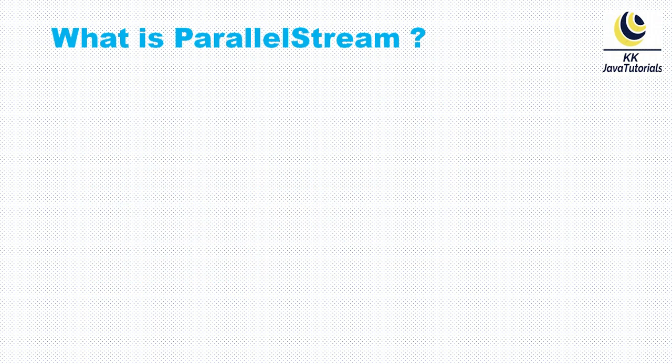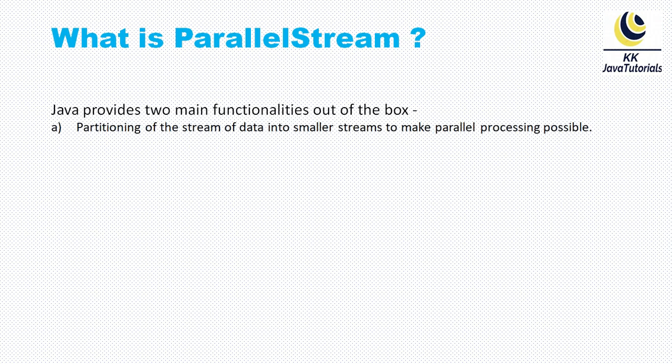Now, what is parallel stream? Java supports two main functionalities out of the box: partitioning of the stream of data into smaller streams to make parallel processing possible, and parallel processing of the data. That's what we require a parallel stream for. In these days, we get machines with multi-core processors, and if you want to use multi-core processors, then stream is one of the best examples. We can make use of parallel stream — you can divide the stream into different chunks and process them on different multi-core processors.